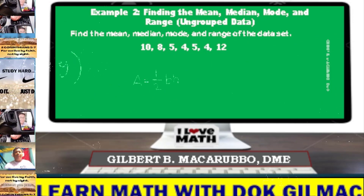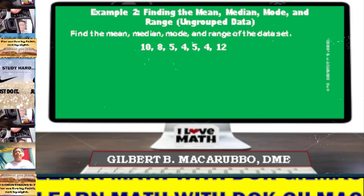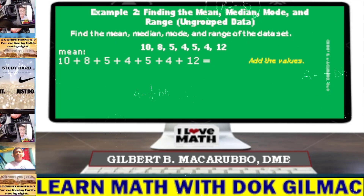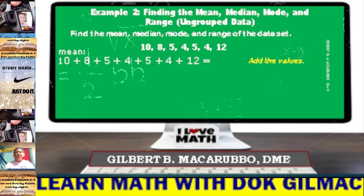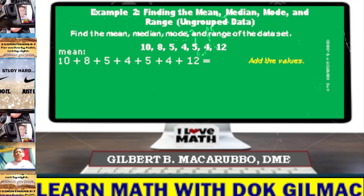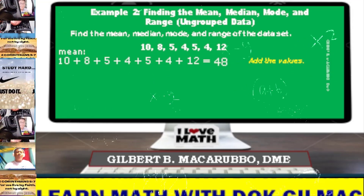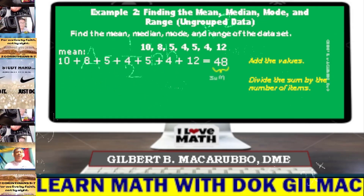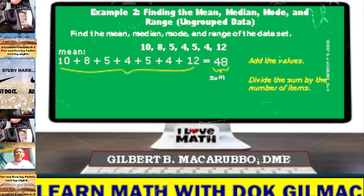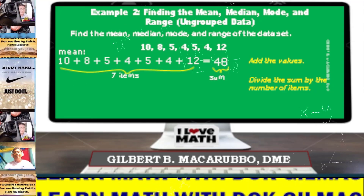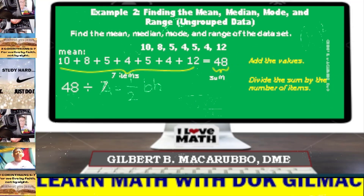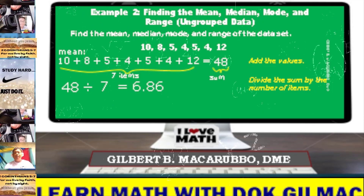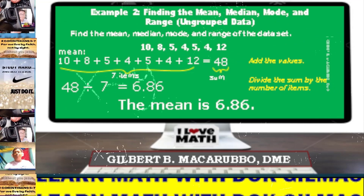Example number 2: find the mean, median, mode, and range of the data set. Let's determine first the mean. Add the values: 10 plus 8 plus 5 plus 4 plus 5 plus 4 plus 12. This is equal to 48. Divide the sum by the number of items. We have the sum of 48 and the number of items which is 7. 48 divided by 7 is equal to 6.86. Therefore, the mean is 6.86.